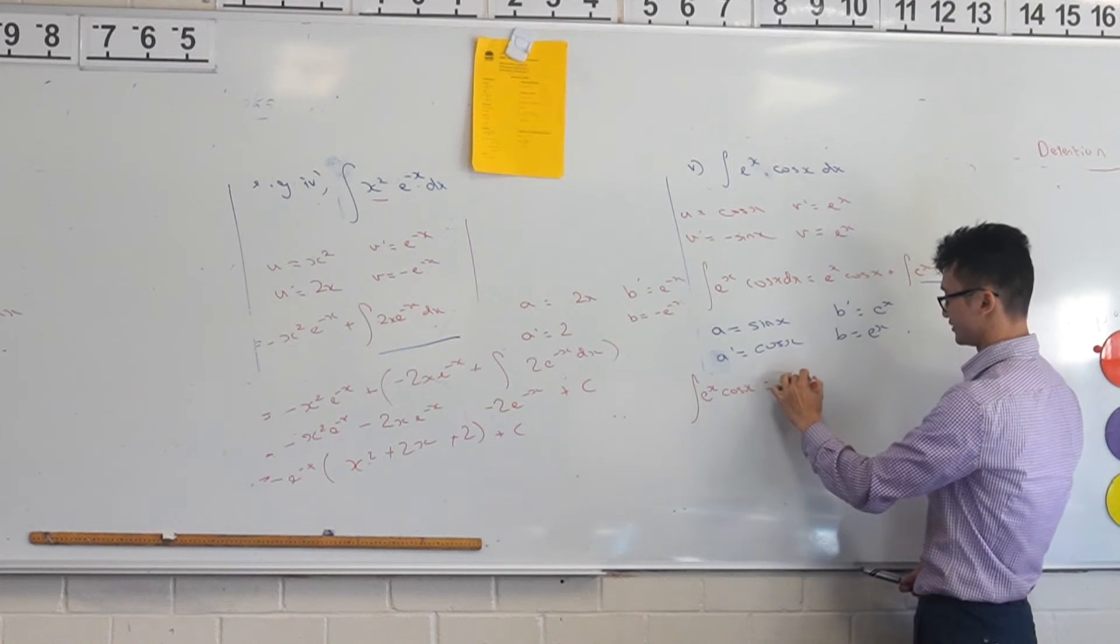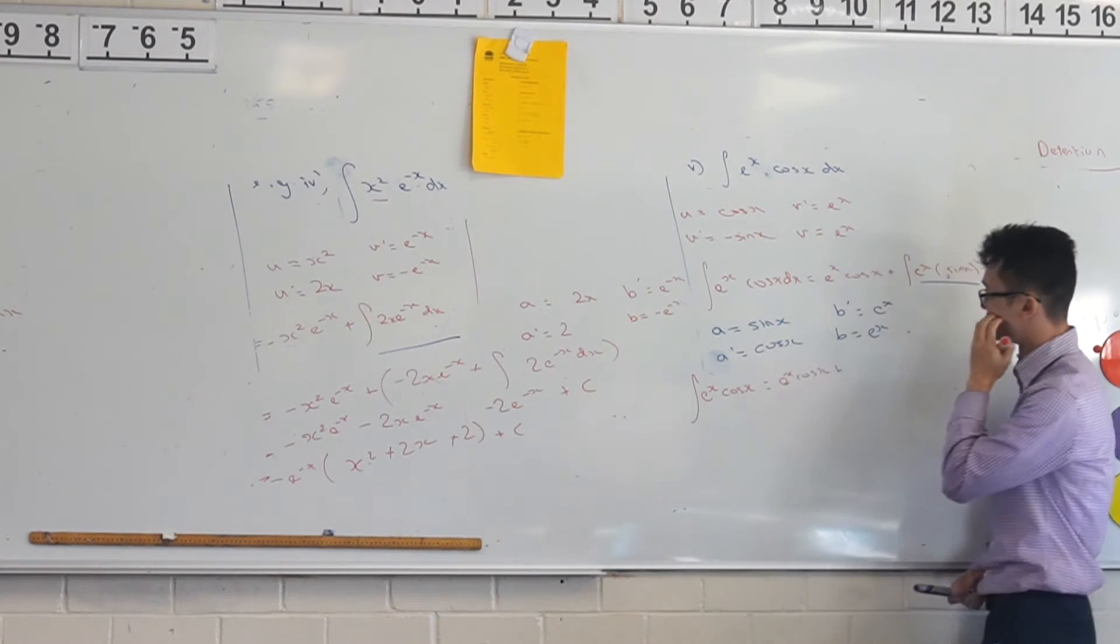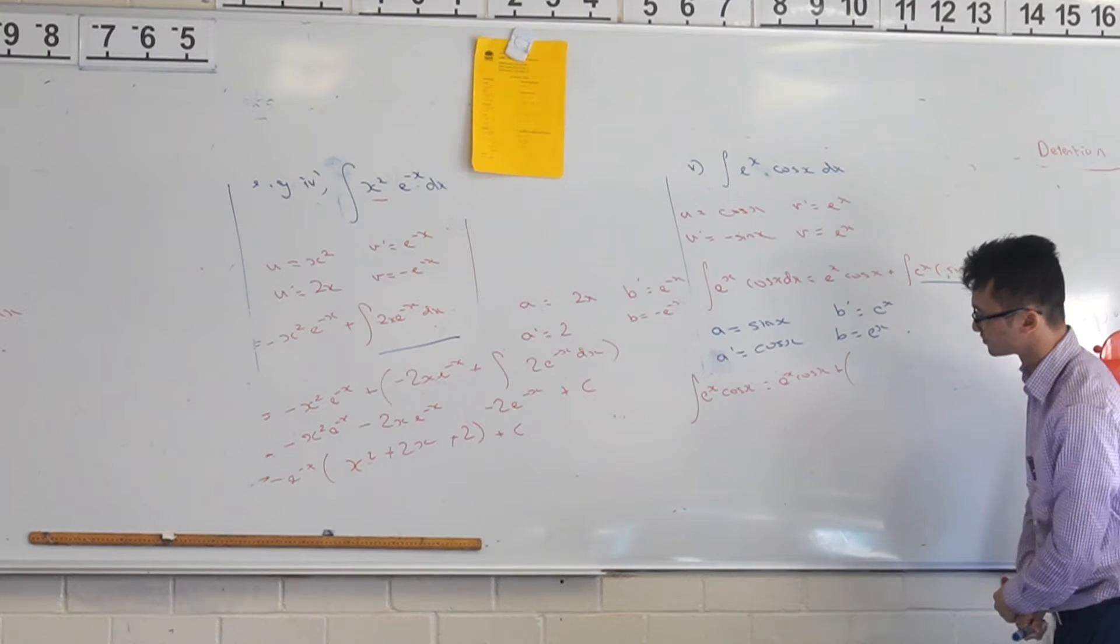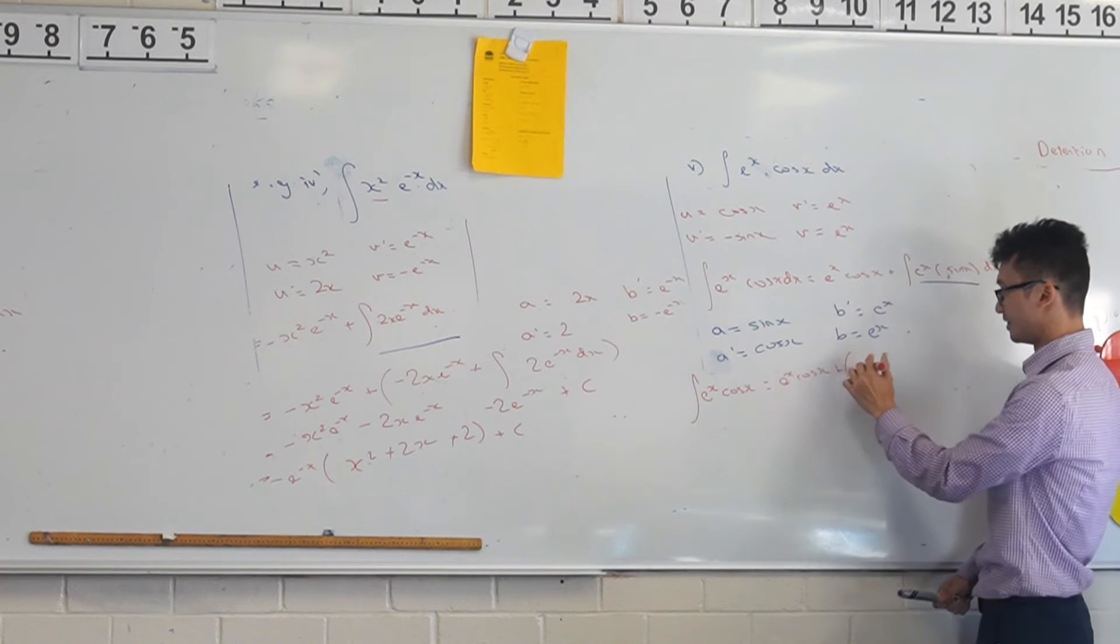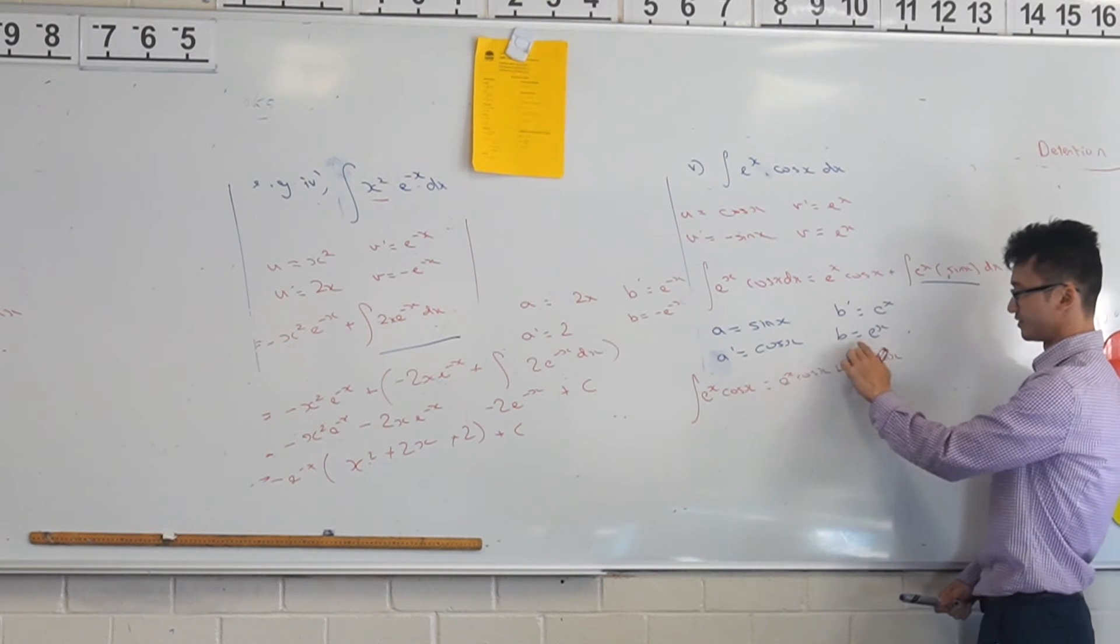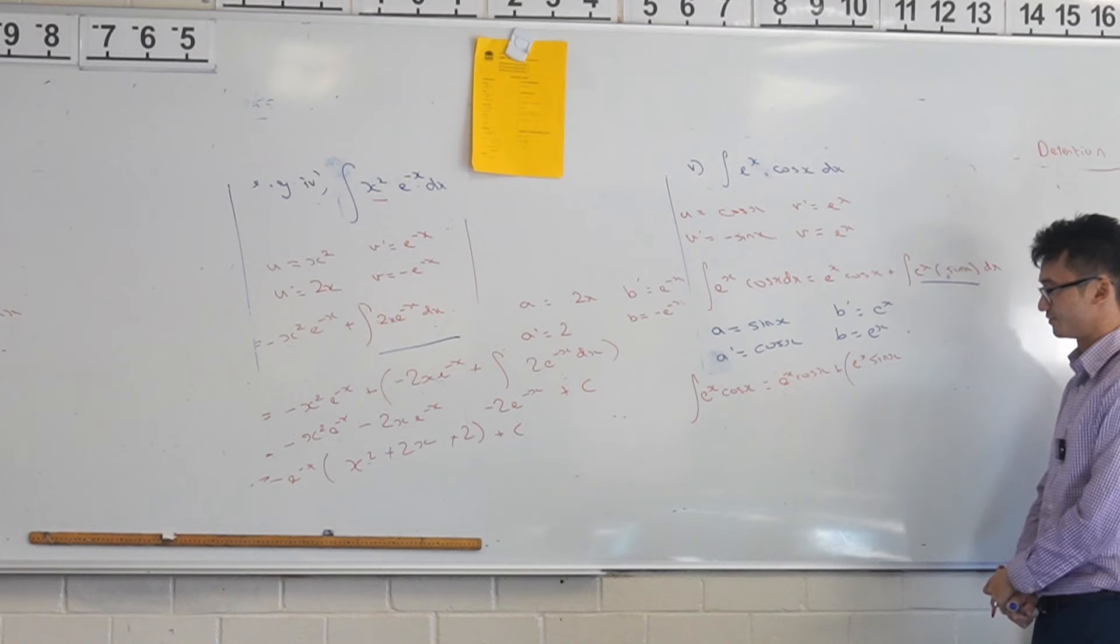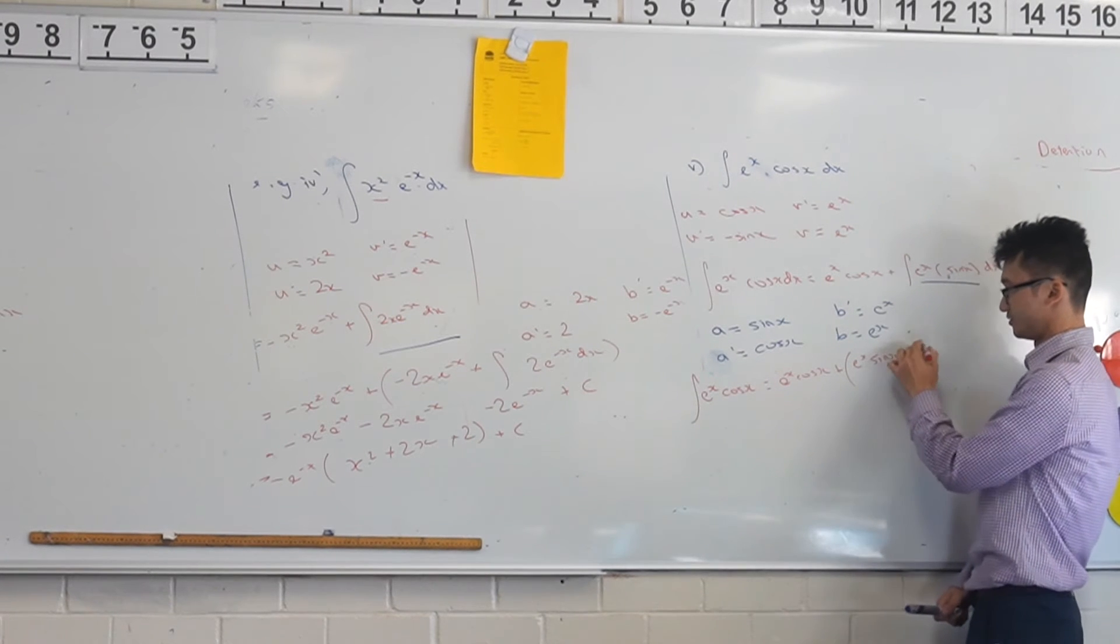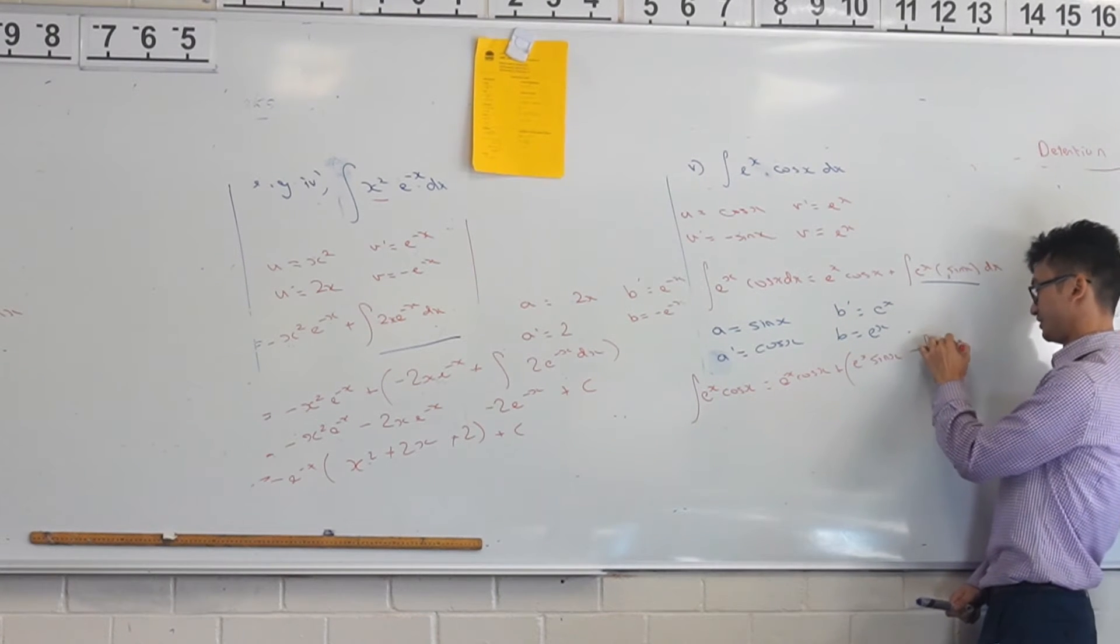Oh sorry, as in I'm reducing, I'm just changing this expression here. Yeah, so I've got e to the x cos of x plus, and then instead of this, what am I writing? You're writing a times b, so e to the x sin of x. Yep. The integral of e to the x cos of x dx.